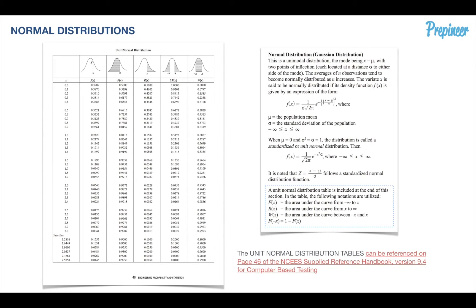Let's look at page 46 of our NCES reference handbook and the unit normal distribution tables. When mu is 0 and sigma is equal to 1, the distribution is called a standardized or unit normal distribution. This table is specifically developed for situations where the mean is 0 and the standard deviation is 1 — so what do we do when we don't have those values?